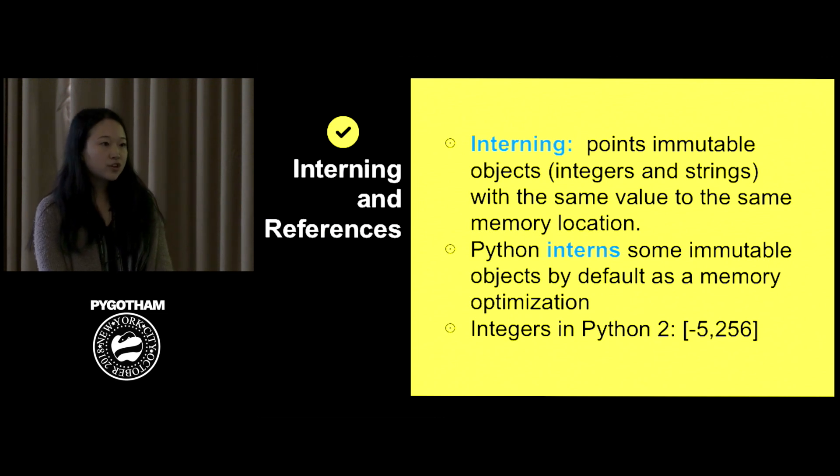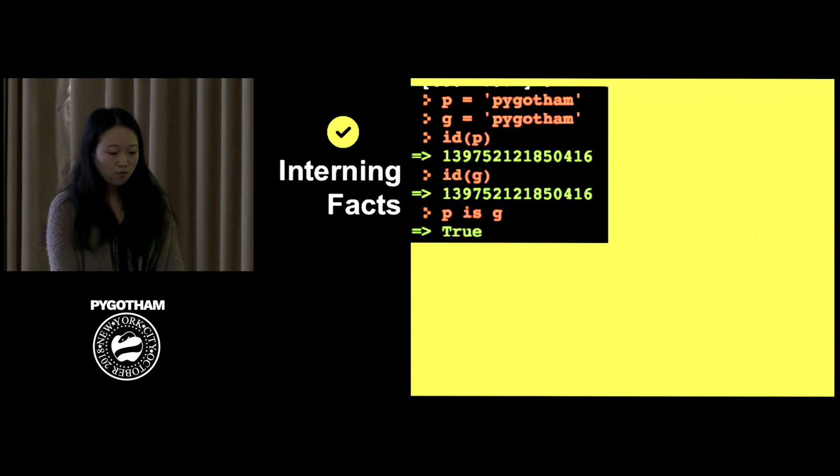So this is something we call interning in Python, which is when Python points to the same memory location for certain integers and strings. And Python does this as a default as a memory optimization for certain numbers and strings. So in Python 2.7 or just Python 2, all numbers from negative 5 to 256 are interned as a default. So no matter how many variables you have that refer to 100 in your program, you're talking about the same exact object. In Python 3, the range of numbers has expanded. For both Python 2 and Python 3, all strings of a certain size that only has lowercase and uppercase A to Z numbers and underscores will be interned by default.